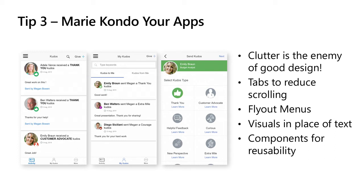Another big one is visuals in place of text. In this case, we're selecting a type of kudos in this screenshot. I could just have the text — 'thank you' and 'learn more' — but that's not very visually appealing. Adding an image goes a long way to show the user what you're trying to do. So the more images you can add, the better.